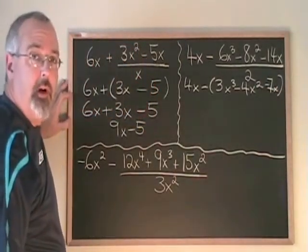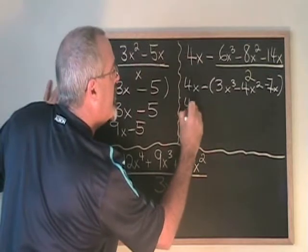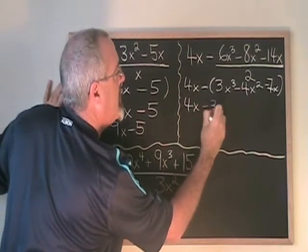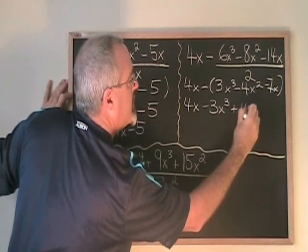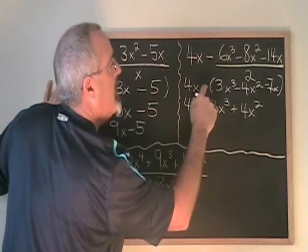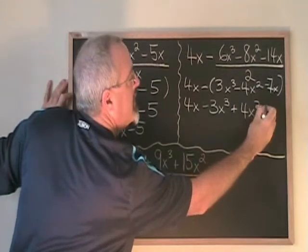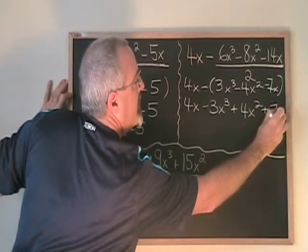Then I remove the bracket as a separate step. And I have 4x minus 3x cubed. Minus minus means plus 4x squared. Minus minus means plus 7x.